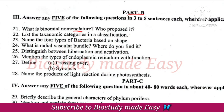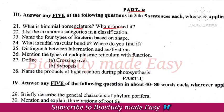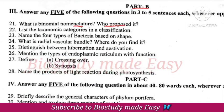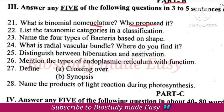Part B question. Nomenclature is binomial nomenclature. Taxonomic categories in classification — species is the base level, and kingdom is the highest level.